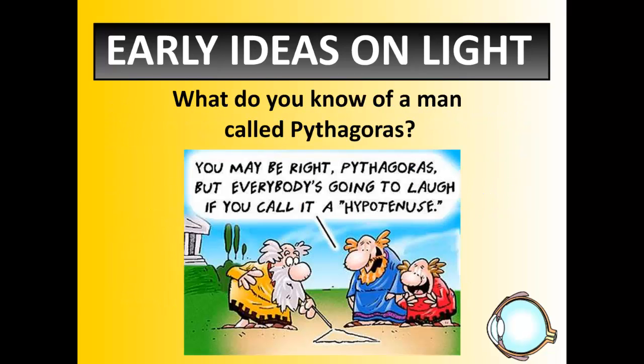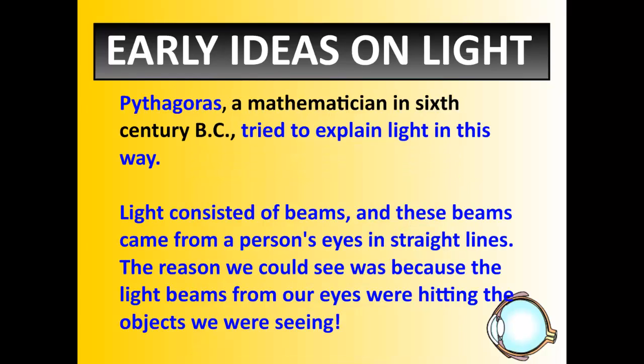The next person I'd like to take a look at is Pythagoras. You should definitely remember him from math class. But Pythagoras also had a scientific background, not just mathematical. Pythagoras had this idea that the way we see light is because light consisted of beams, and these beams came from our eyes — that's where the light came from. The reason we could see was because the light beams were hitting everything. Essentially, it was like your eyeballs were flashlights, with light coming from your eyes and striking a surface.